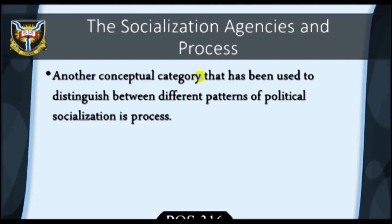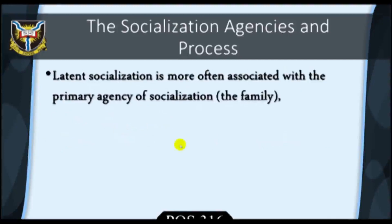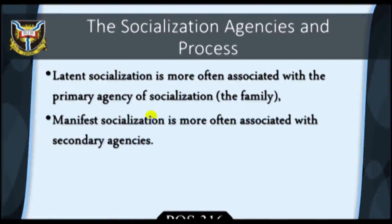Another conceptual category that has been used to distinguish between different patterns of Political Socialization is process. Political sociologists and behavioralists, particularly in the field of comparative studies, have argued that the political socialization process may be latent or manifest. While latent socialization is more often associated with the primary agency of socialization — that is, the family — manifest socialization is more often associated with secondary agencies. Thus, latent Political Socialization entails the implicit and informal transmission of political symbols, values, norms, and ideas through the family.